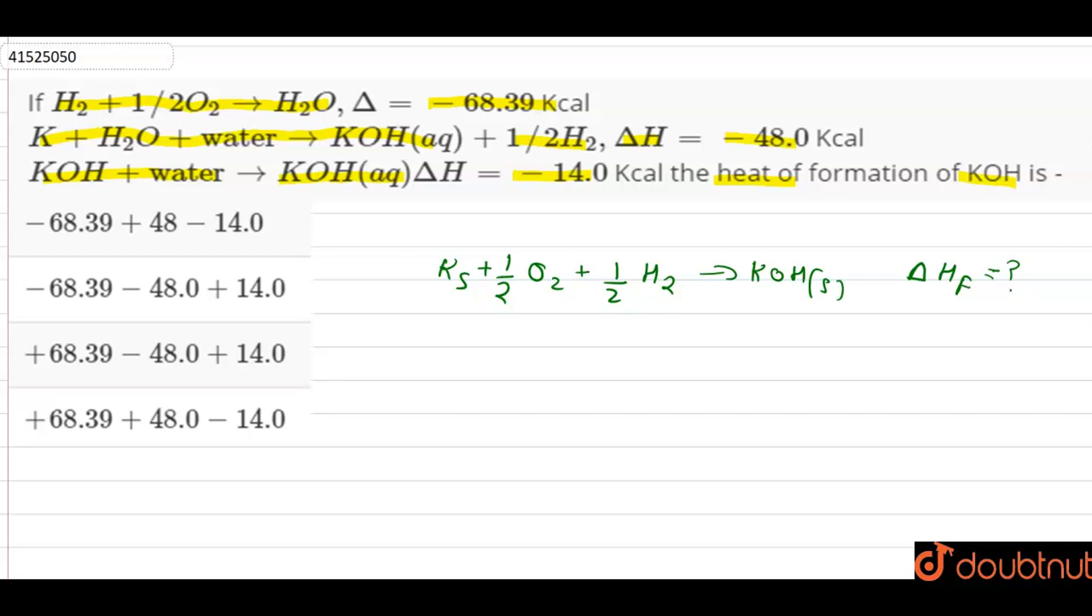So we will rearrange the equations. How can we rearrange? Let's first write down the equations. H2 plus half O2 gives us H2O. Its delta H is minus 68.39.